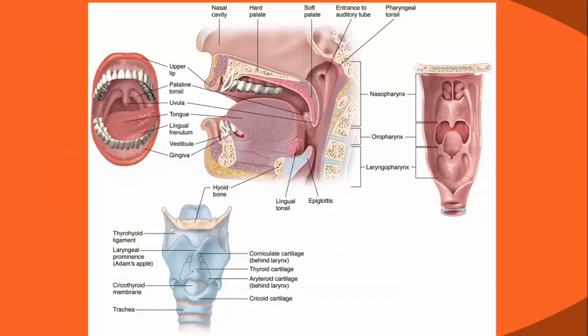A major skill in paramedic school is intubation — being able to save patients when a supraglottic airway or BVM is ineffective. Reference for this content is page 714, figure 2 of Nancy Caroline's textbook. The cricothyroid structure includes the thyroid cartilage and the cricoid below.